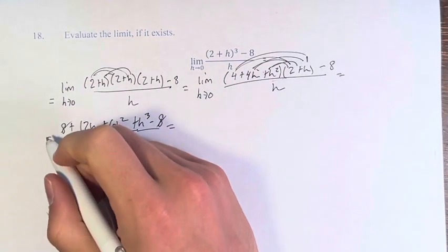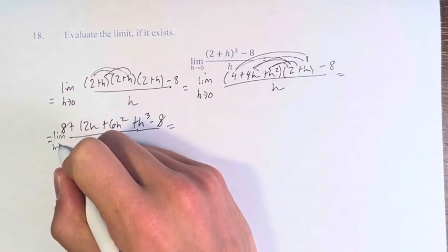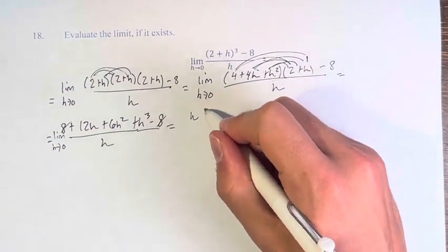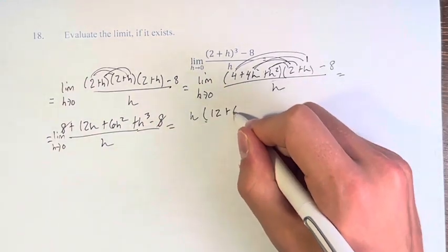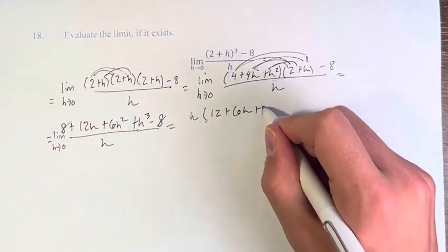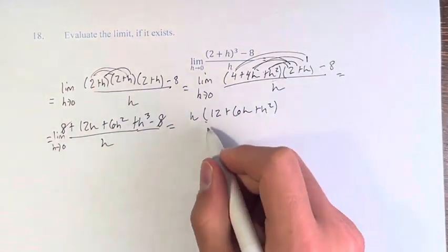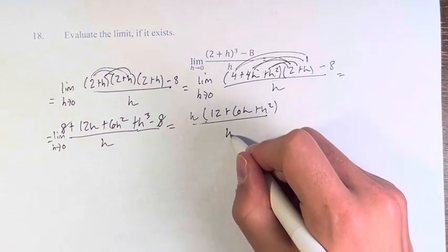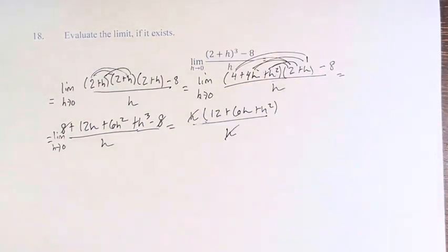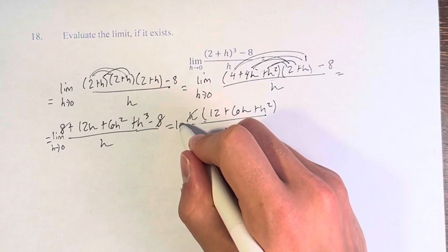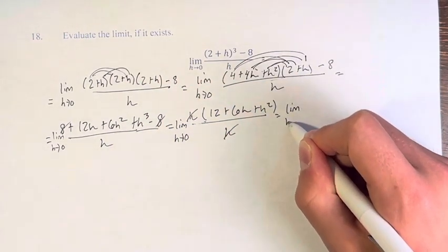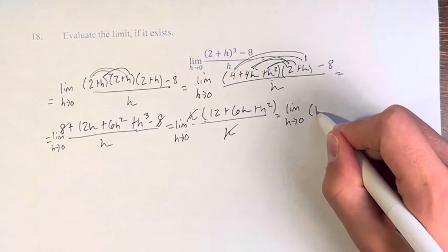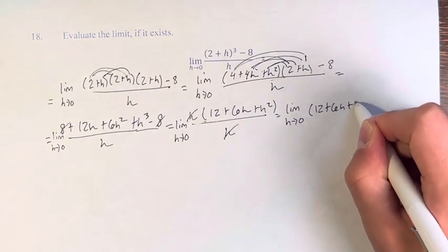So if we factor out an h from the top here, without forgetting that this is a limit, we're left with 12 plus 6h plus h². We divide by h. We cancel these h's out now. And because we do that, we get the limit as h approaches 0 of 12 plus 6h plus h².